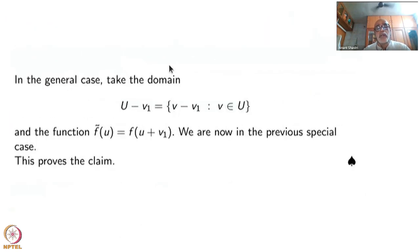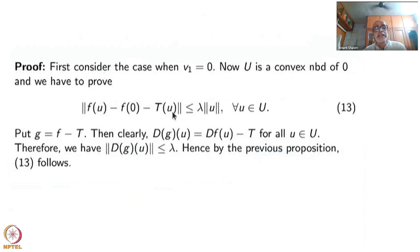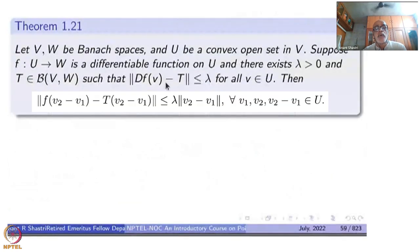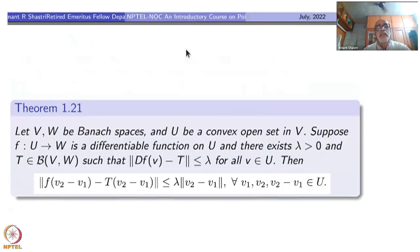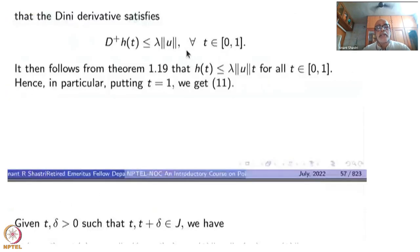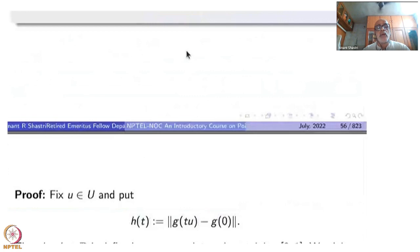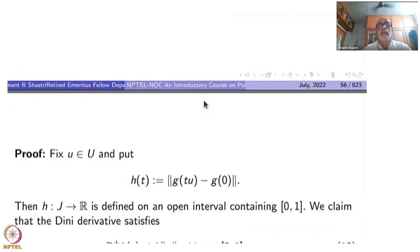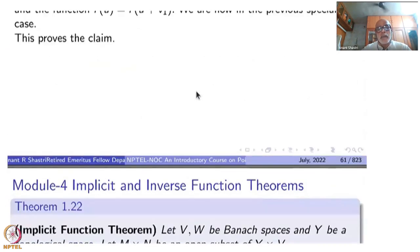Whatever we wanted, we have proved it by shifting the function — the shift occurring by a linear map. Essentially Theorem 1.21 is just a modification of the earlier proposition, and that proposition was proved using the Dini derivative.